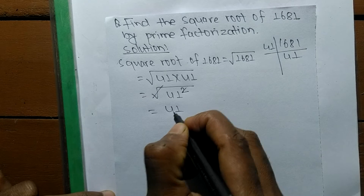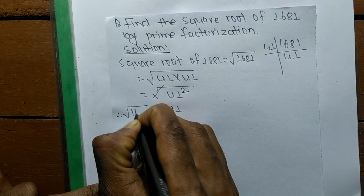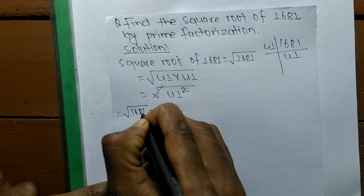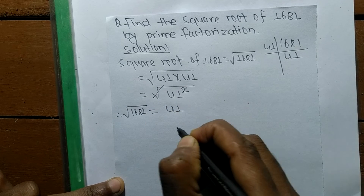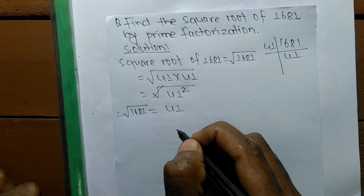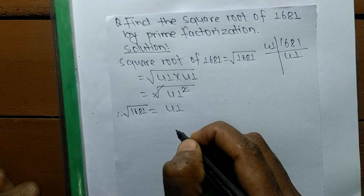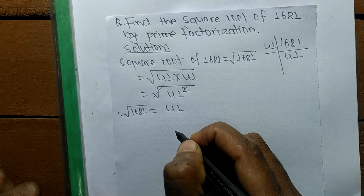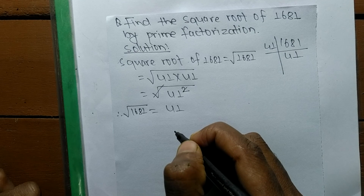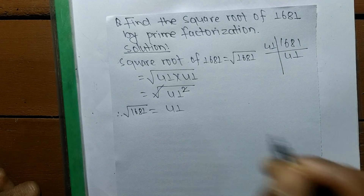So the square root of 1681 is 41. If you have any question related to math and science, just comment your question below and we shall provide a video solution. Thank you.